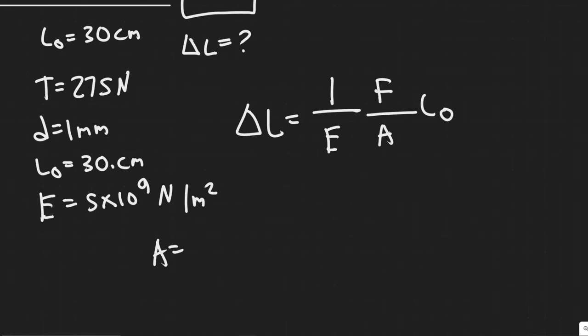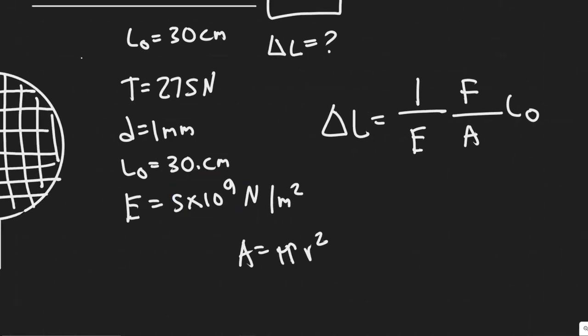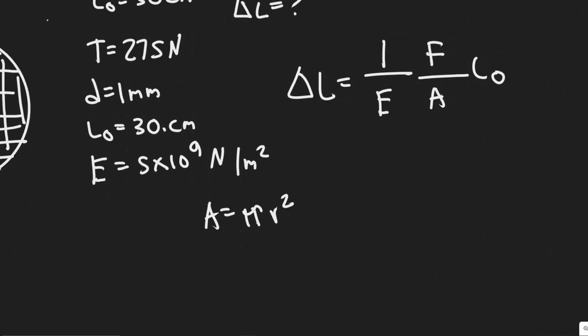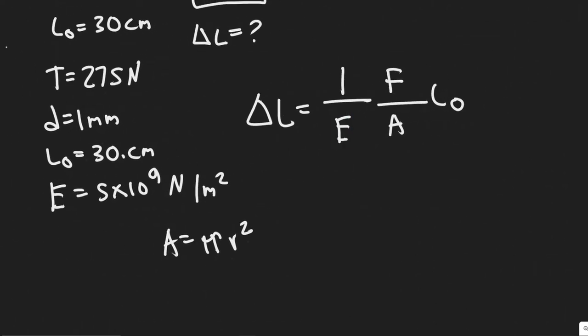A is the cross-sectional area. You need to know that A equals pi R squared. And we are given the diameter, so what we can do is solve for it. So all we got to do is just plug in D there once we divide it by 2 to get the radius.